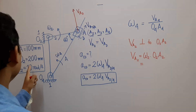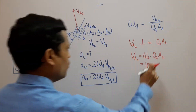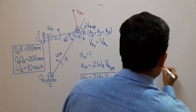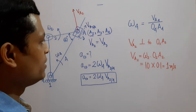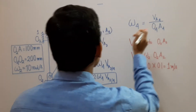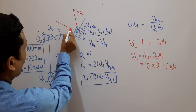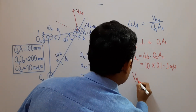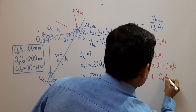Omega 2 is 10 radians per second, and O2A2 is 100 mm (0.1 m), so VA2 = 10 × 0.1 = 1 meter per second. We have determined VA2 and we also know its direction. Now, VA4 is perpendicular to link 4.